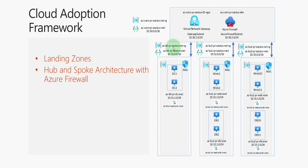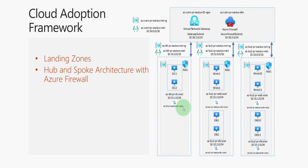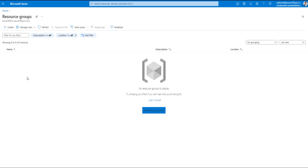We've also dedicated a resource group for identity for the domain controllers. There will be peering from hub to spoke 1, hub to spoke 2, and hub to spoke 3. Traffic from the spokes will go via the Azure Firewall, which is why we're creating a route table in this video — so that all traffic is directed through the Azure Firewall.